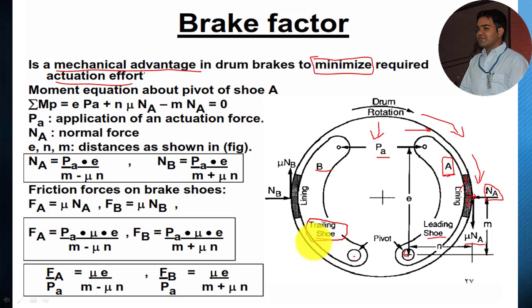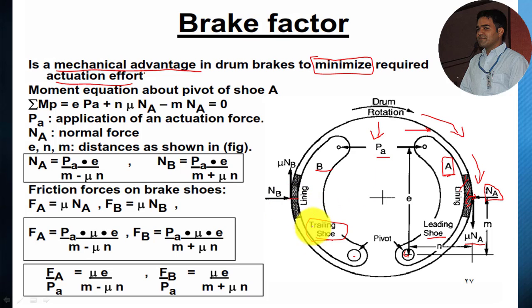Likewise, for the trailing shoe — considering the rotation of the drum, the brake force applied at this point will try to throw this brake shoe apart from this contact point. So the actual braking force generated at this point is less, and that's why it is known as a trailing shoe. With the help of this fundamental, let's try to understand the brake factor. We consider this system to be in equilibrium condition.